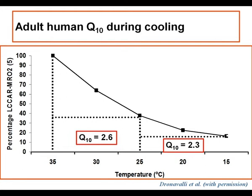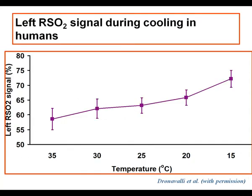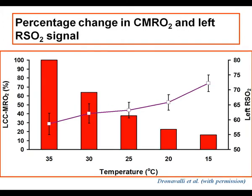These changes in metabolic rate are associated with marked elevation of the jugular bulb oxygen saturation, but this elevation is not accompanied by such a profound elevation in the regional SO2 signal, which is a mixed signal between the arterial and venous phases within the brain. The starting rSO2 signal is about 57 at 35 degrees centigrade, rising to about 72 with cooling. Although it is a guide, it is not necessarily an assured guide of what is happening.